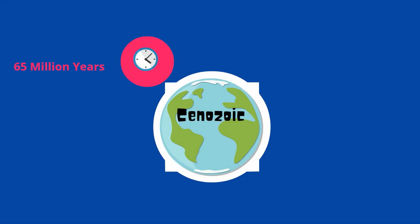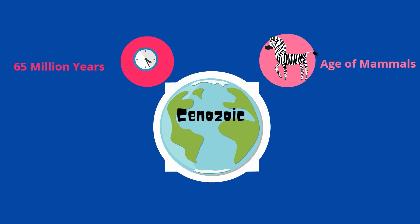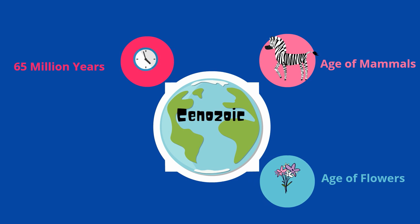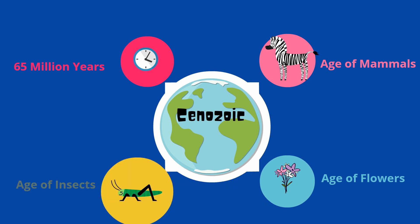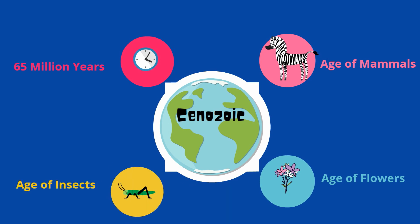It is often described as the age of mammals, but could also be called the age of flowering plants or the age of insects. Let's hit several highlights of this era.